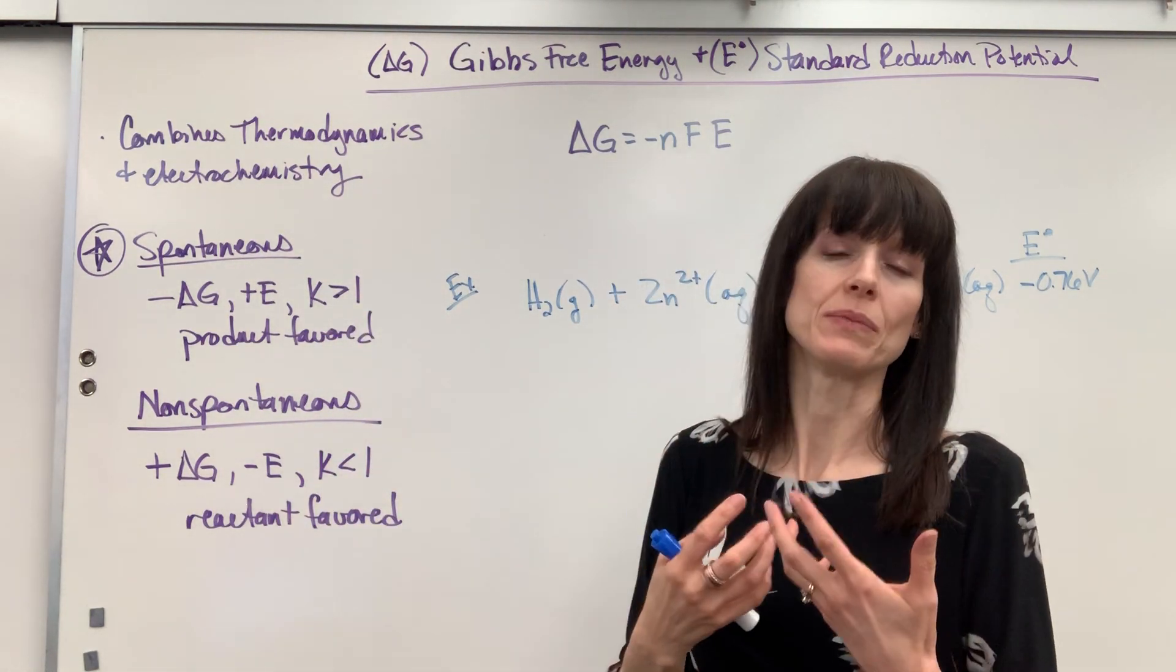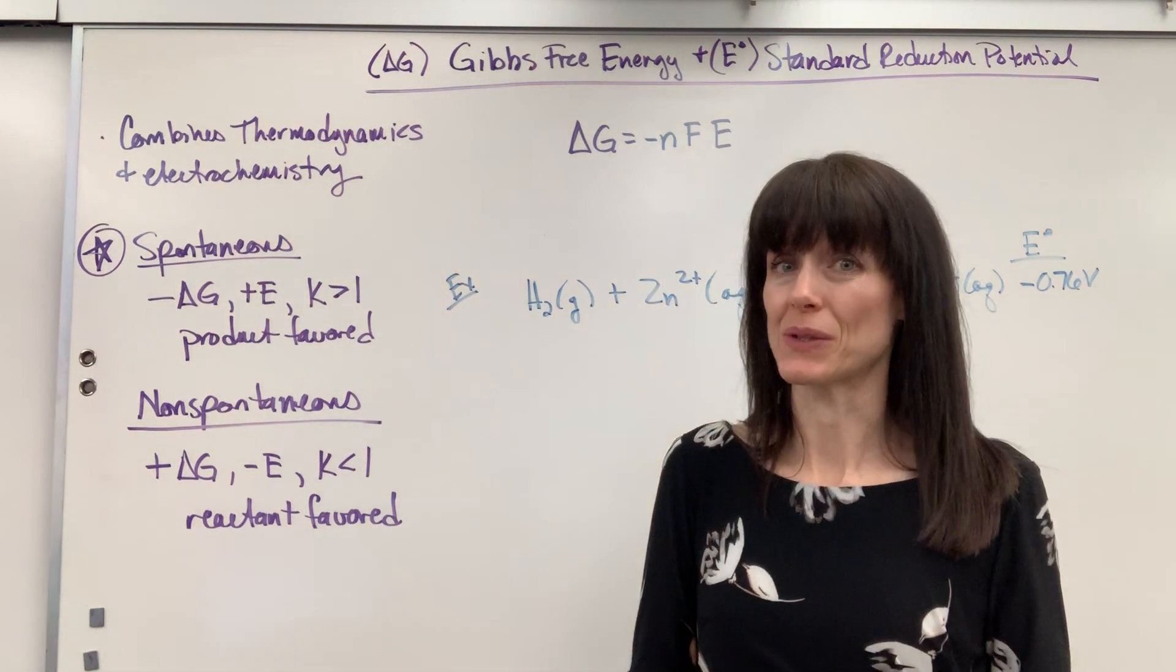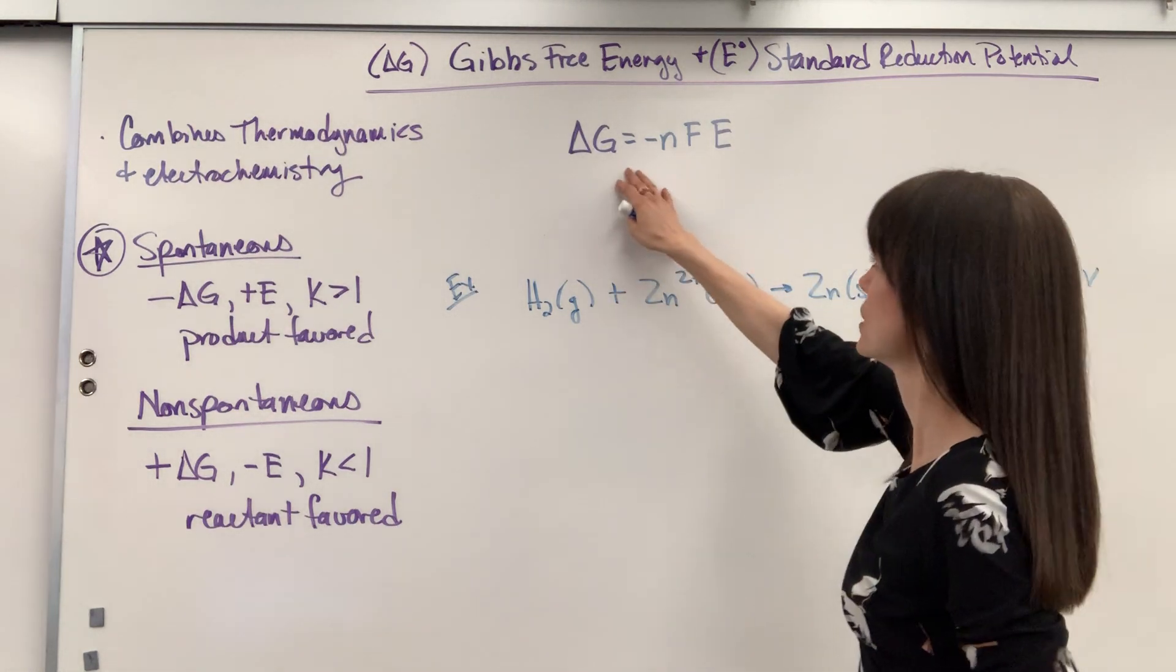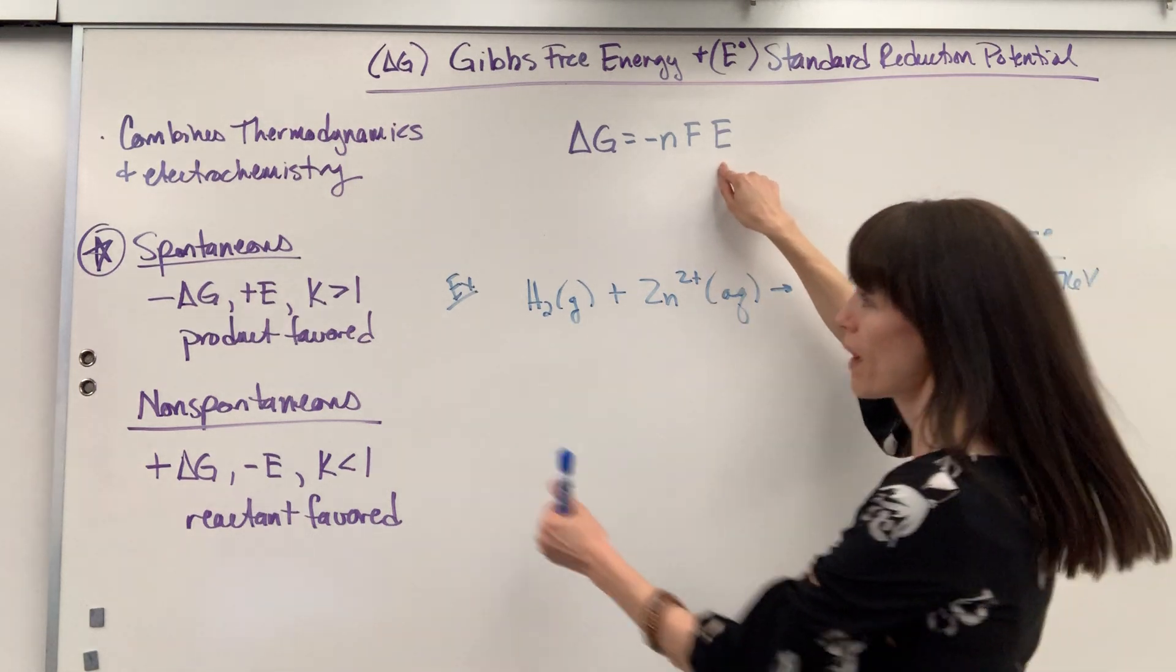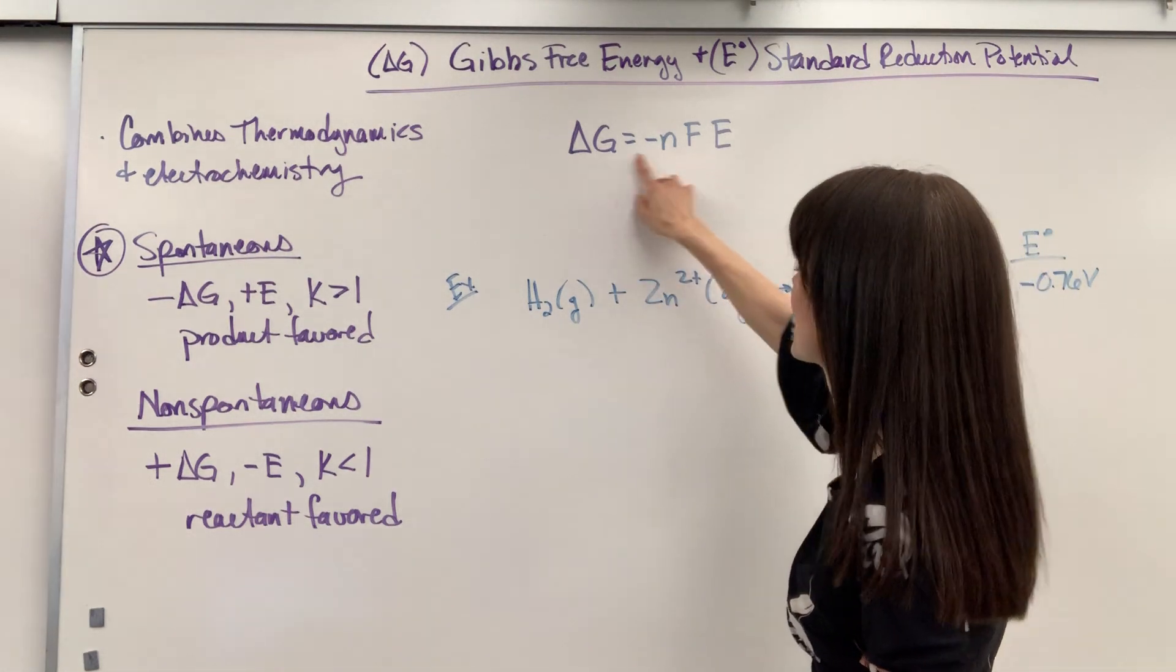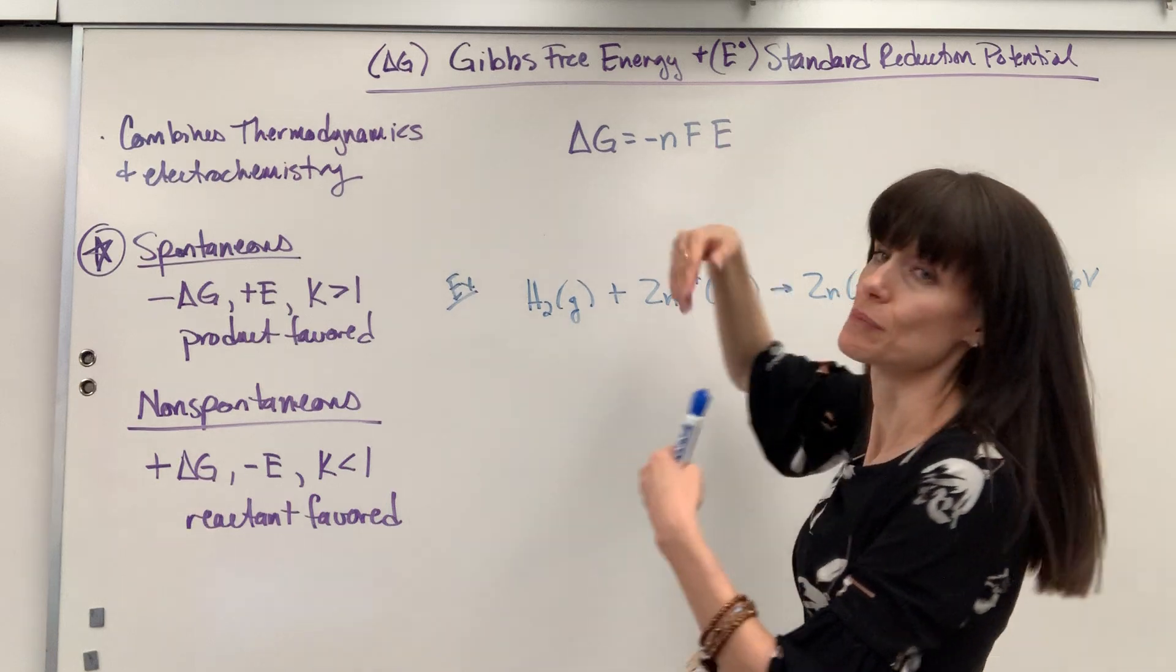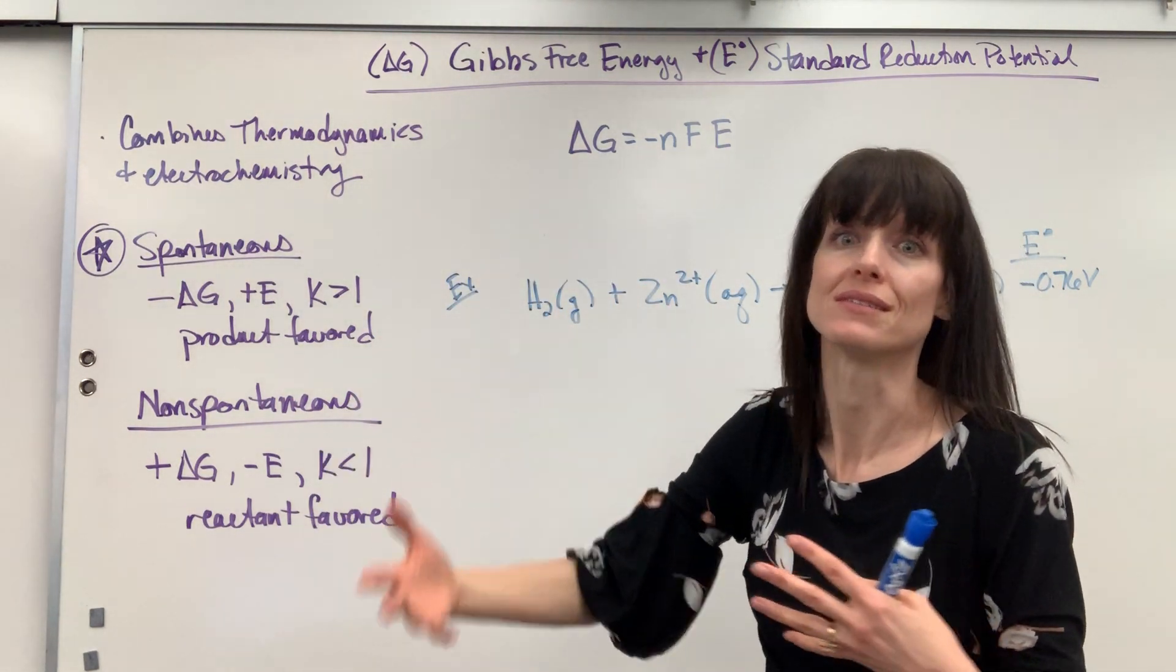Those are your two big takeaways of combining these really big principles of thermodynamics, equilibrium and electrochemistry. Here we have this formula delta G equals negative nFE. Notice when E is positive you multiply this through you'll get a negative. Positive times negative will give you the negative delta G which means positive E is spontaneous because delta G will be negative and that is spontaneous.